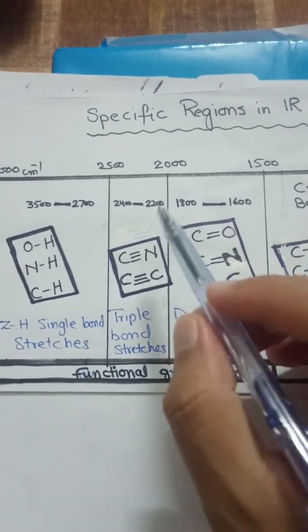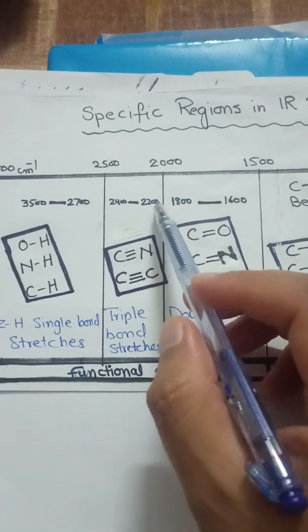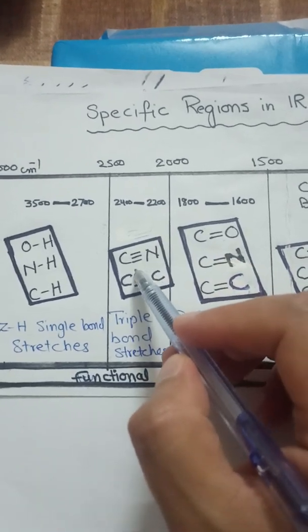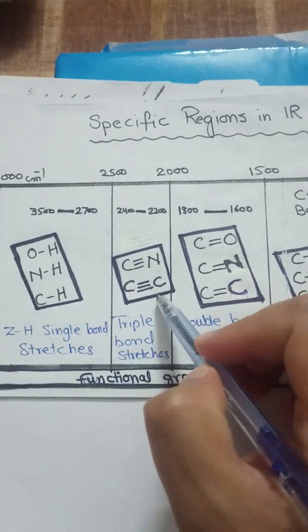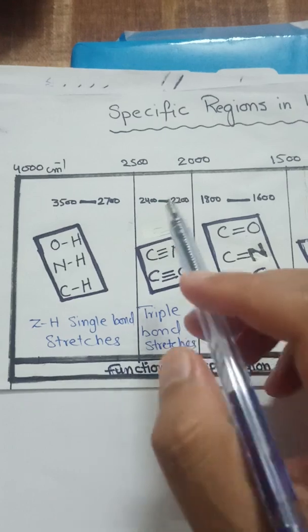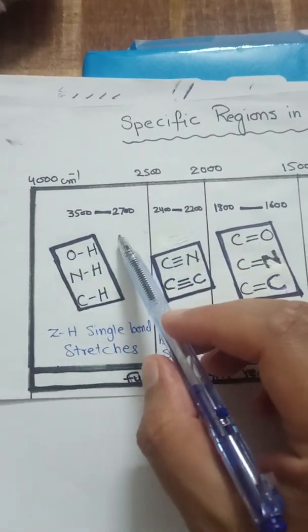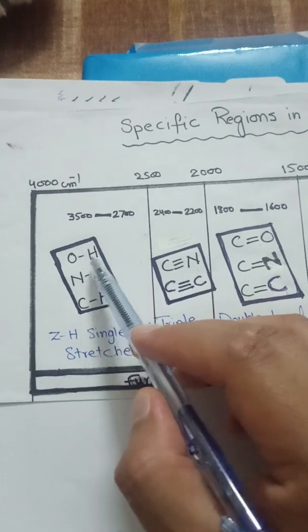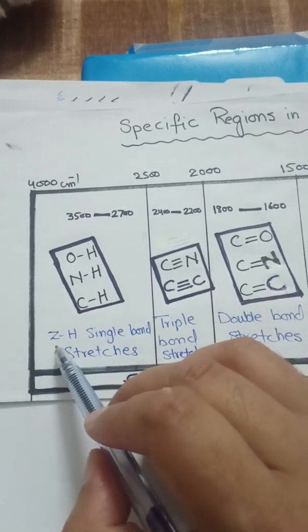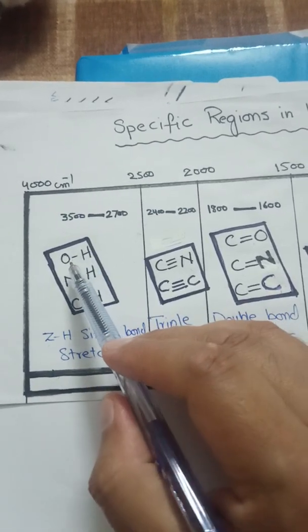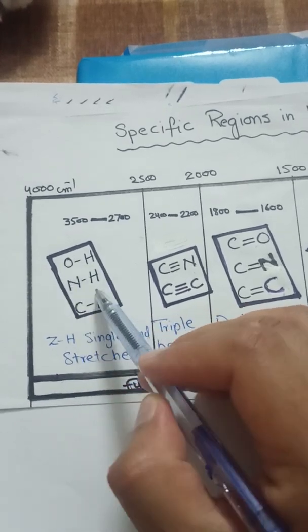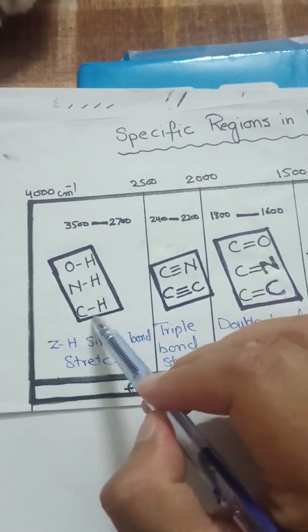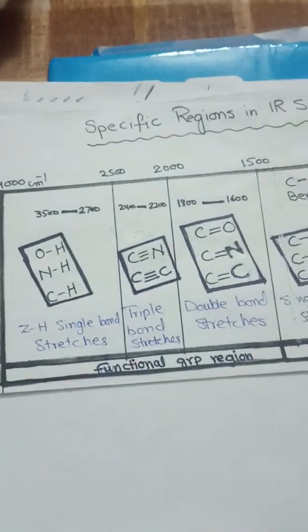The triple bond stretching region is from 2000 to 2500, more specifically from 2200 to 2400, where we have nitrile group stretching vibrations and the alkyne C≡C bond. From 2500 to 4000 — more specifically 2700 to 3500 — is the region where X-H bonds such as O-H, N-H, or C-H are present, referred to as X-H single bond stretches. This includes alcohol, phenol, amine, and hydrocarbon C-H groups.